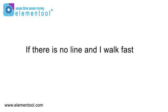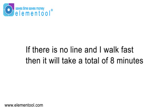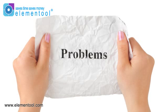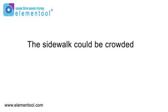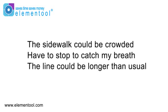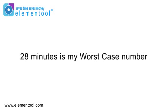If there is no line and I walk fast, then I think it will take a total of 8 minutes — so that's my best case number. Now for my worst case number, I have to consider what might go wrong. The sidewalk could be crowded, I might nearly get run over by a taxi crossing the street and have to stop to catch my breath, and worst of all, the line could be 3 times as long as usual because everyone is stocking up on snacks for the big game tonight. I figure that puts my worst case number at 28 minutes.